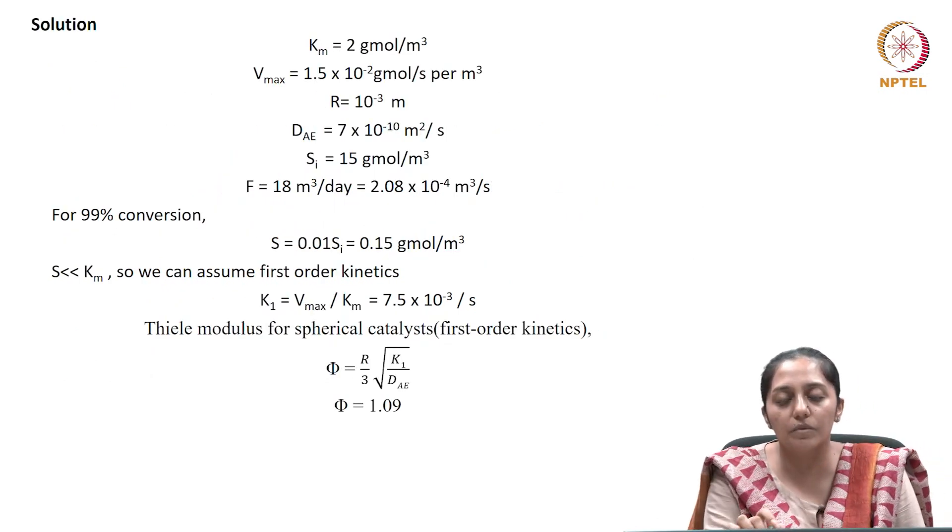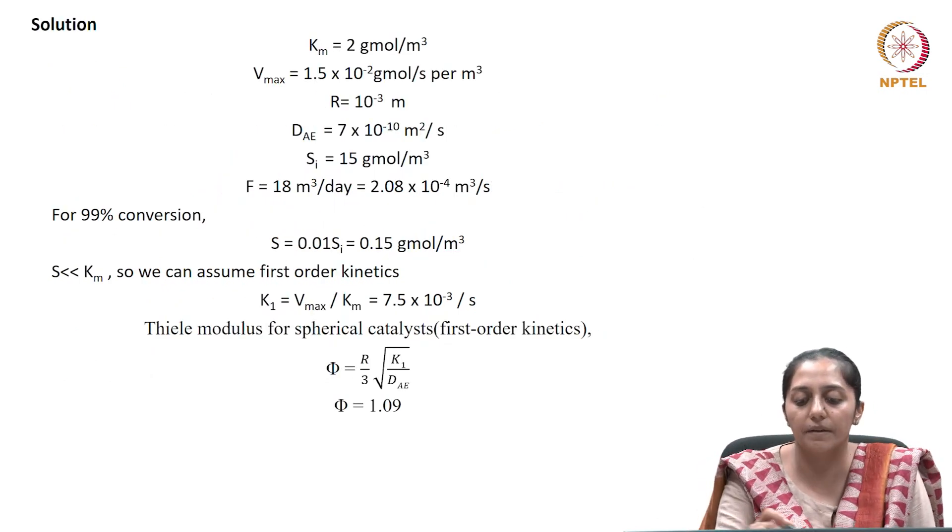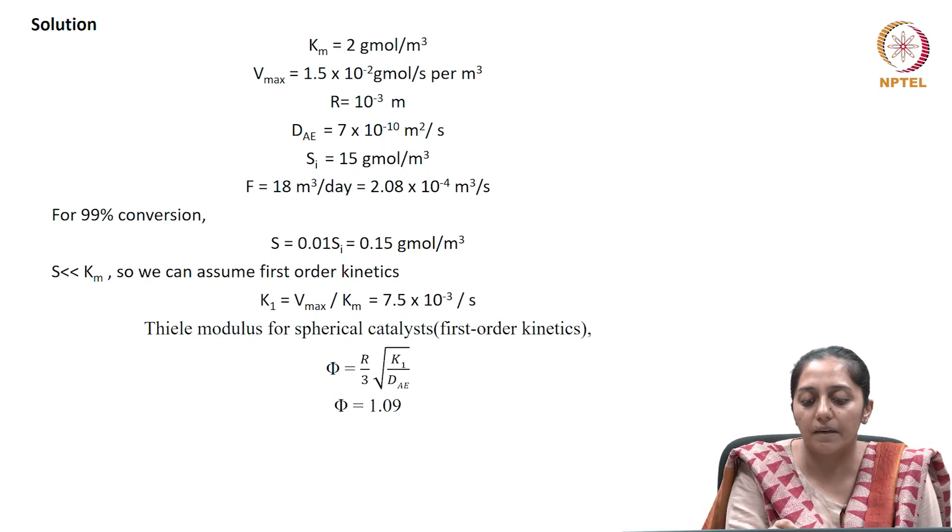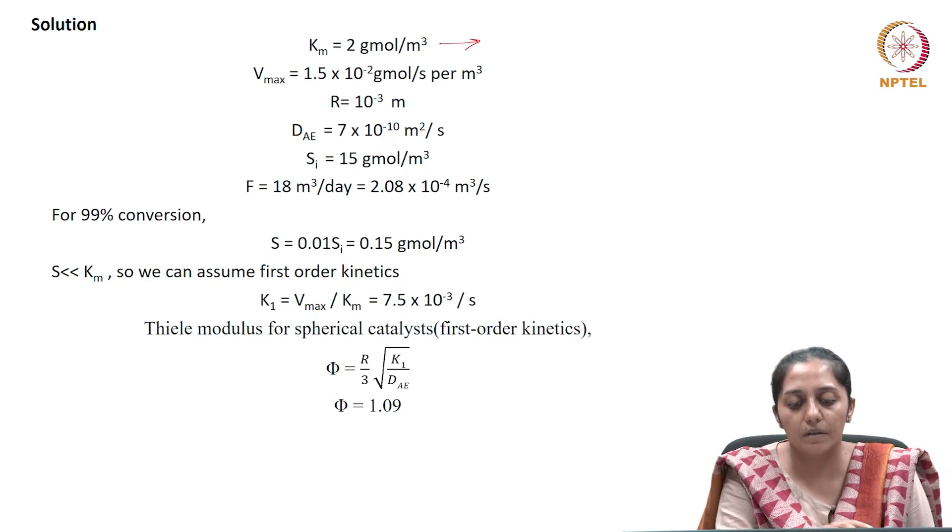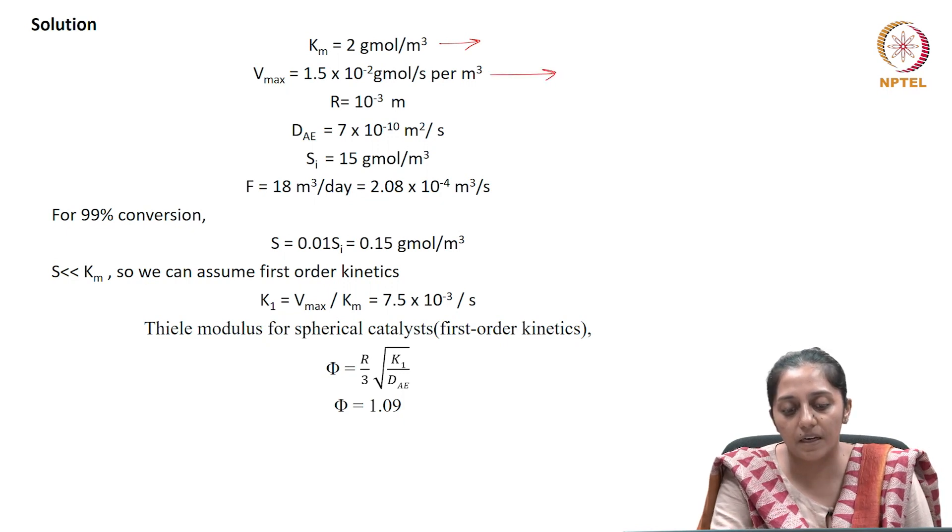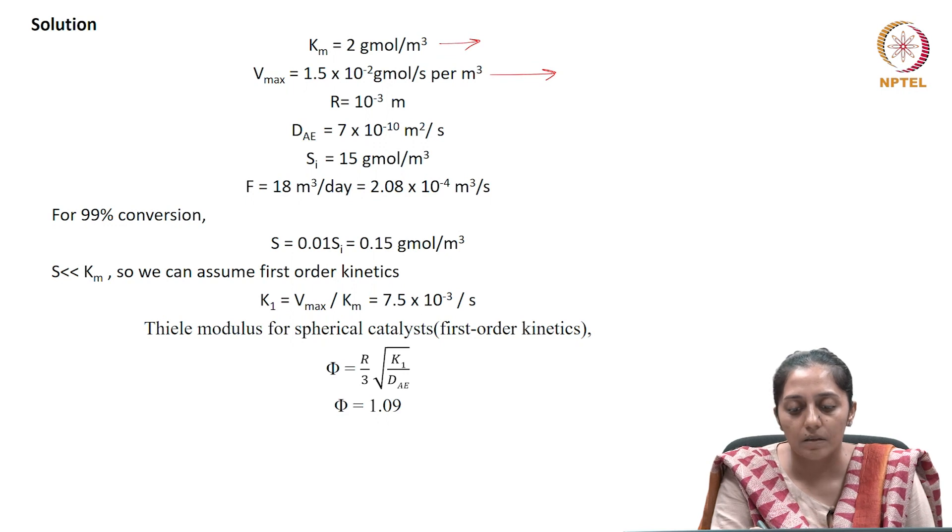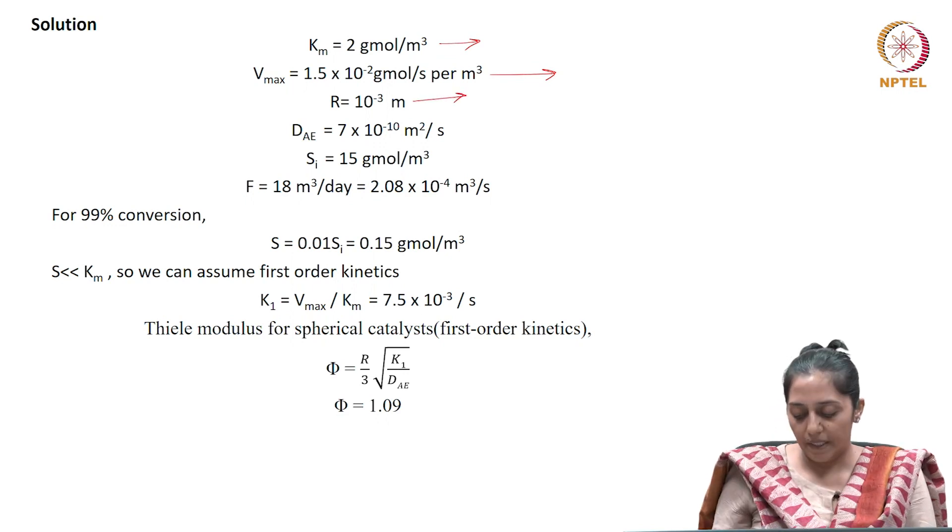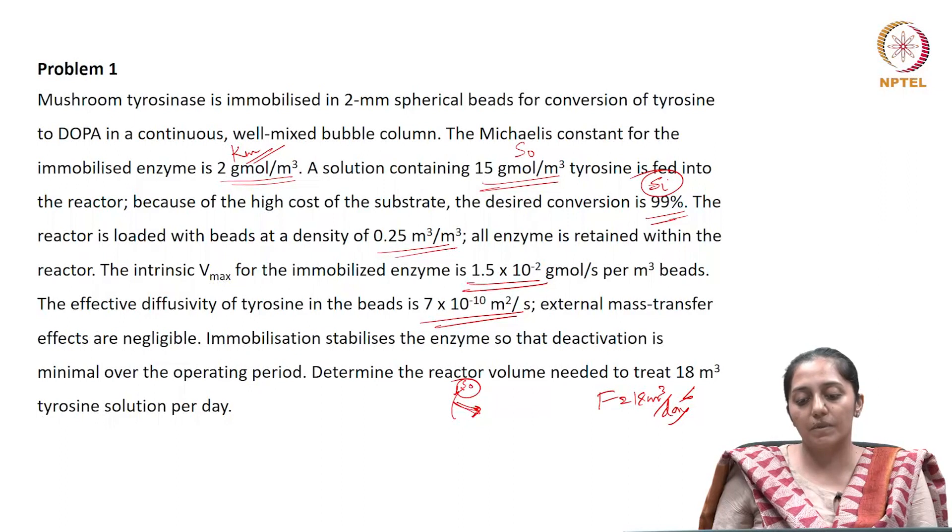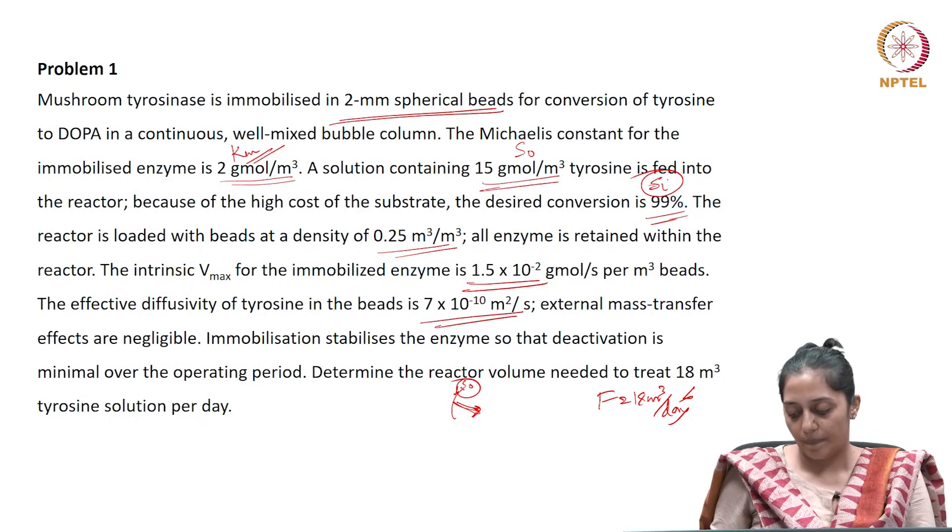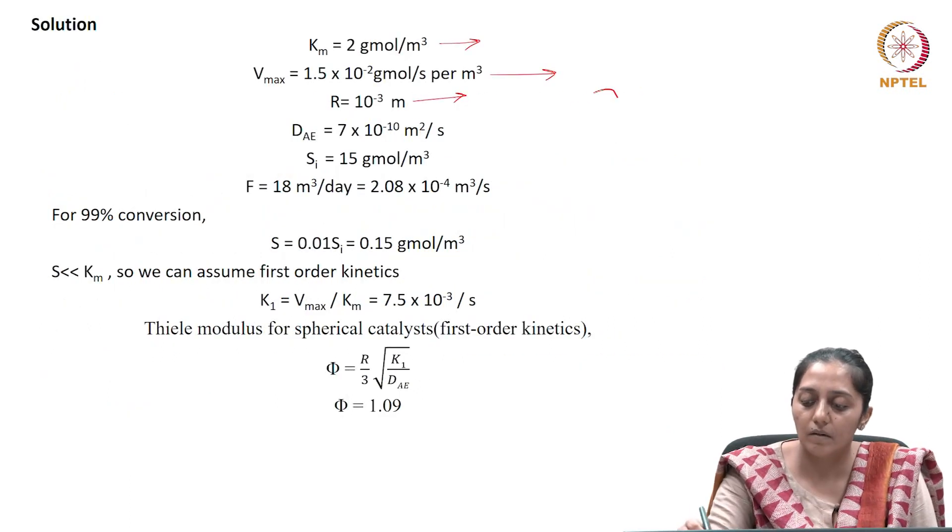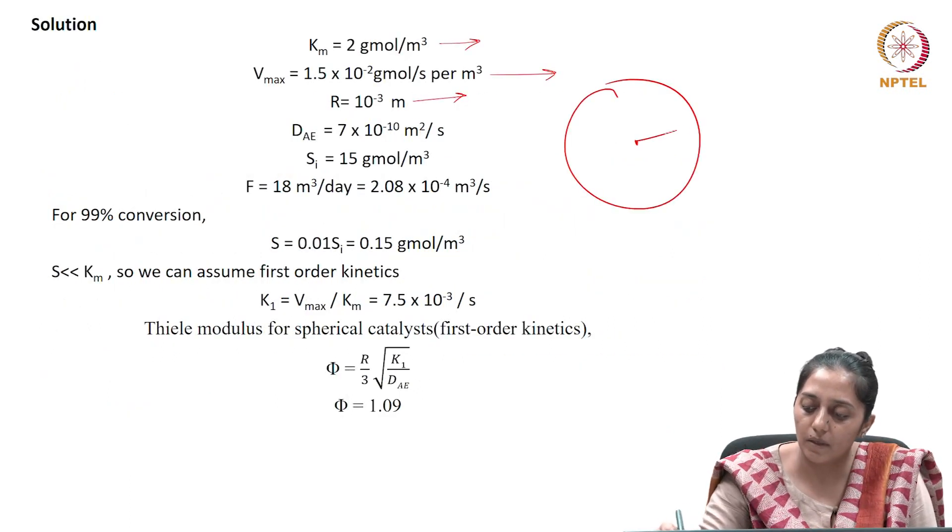Let us list the information provided. The Michaelis-Menten constant Km is given, the maximum reaction rate Vmax is given, and the radius of the bead can be calculated from the diameter of 2 millimeters.